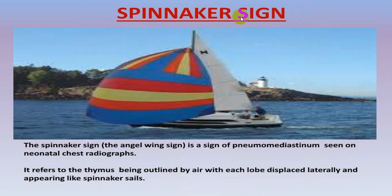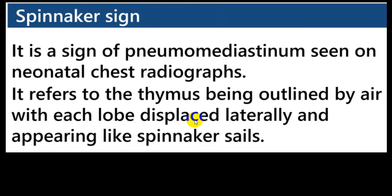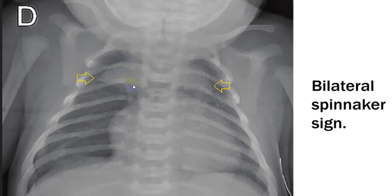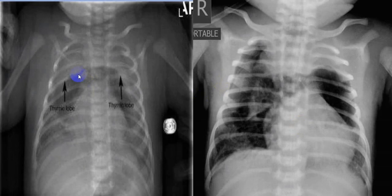The spinnaker sign is like an angel-wing sign — a sign of pneumomediastinum, very frequently seen in neonates. It refers to the thymus being outlined by air, with each lobe displaced laterally, appearing like spinnaker sails. You can see this bilateral appearance — bilateral pneumothorax in that condition produces the spinnaker sign. The thymus flow is clearly visible here.